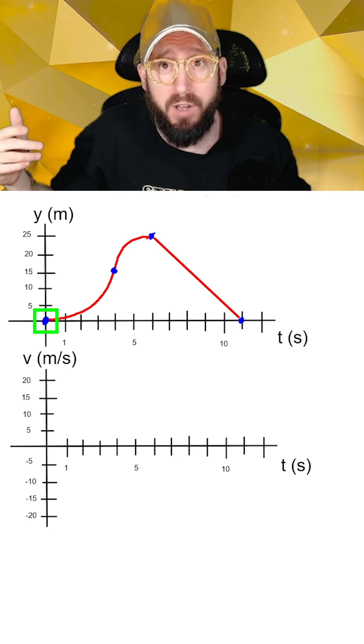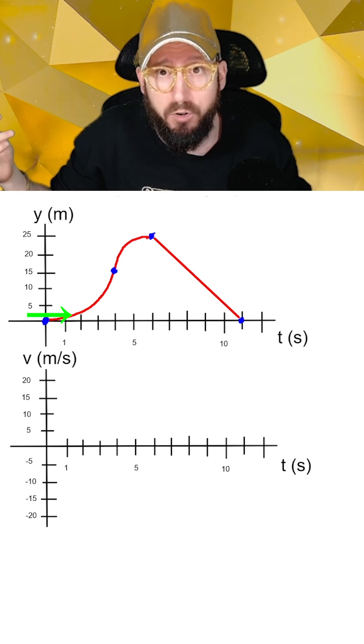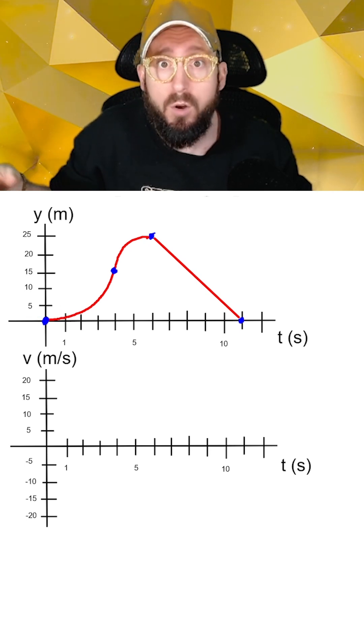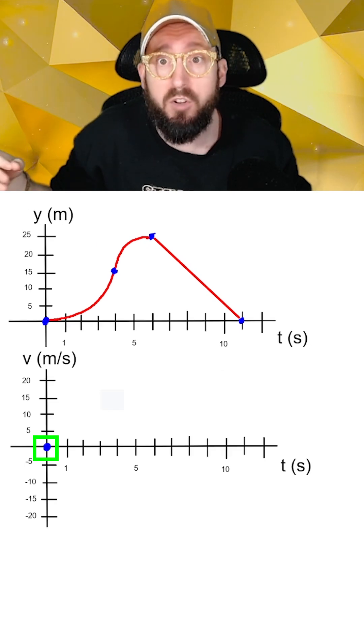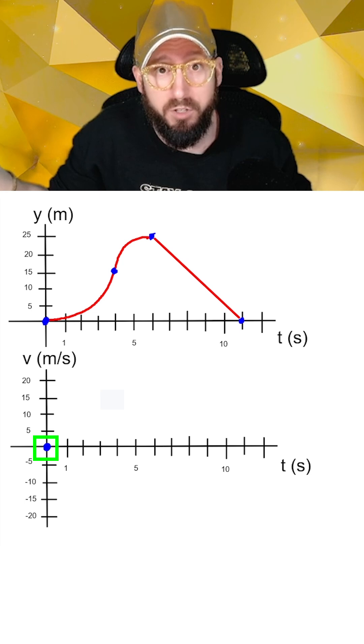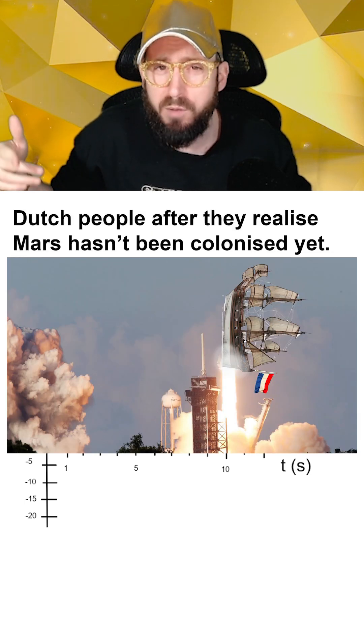Looking at the first critical time point at t equals zero, we can see that the slope of our position graph is basically a horizontal line, which means the slope is zero. Since the velocity is the slope of position, this means our velocity at t equals zero is also zero. This makes sense because most rocket ships start at rest.